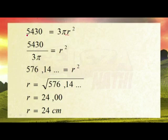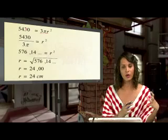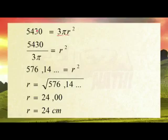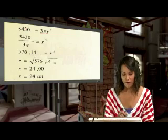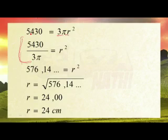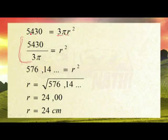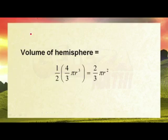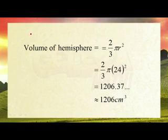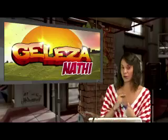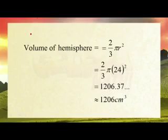We divide 5,430 by 3 pi to get r squared equals 576.14. Taking the square root gives r equals 24. Now we substitute into the volume formula: 2 over 3 times pi times 24 cubed, which gives us 1,206.37. Rounding down since the decimal is below 5, the volume is 1,206 centimeters cubed.